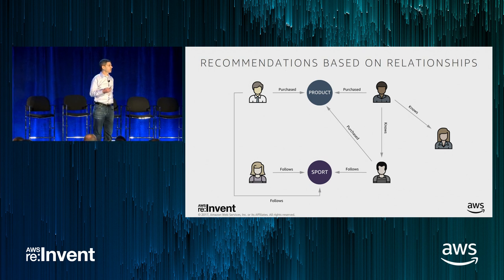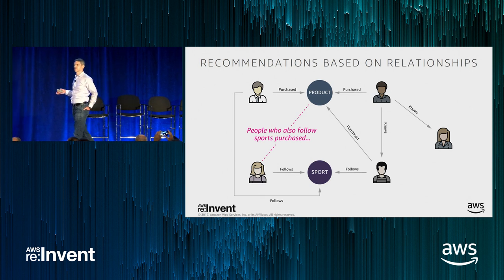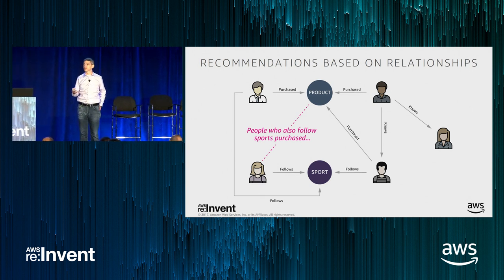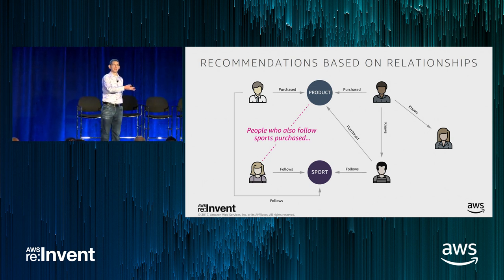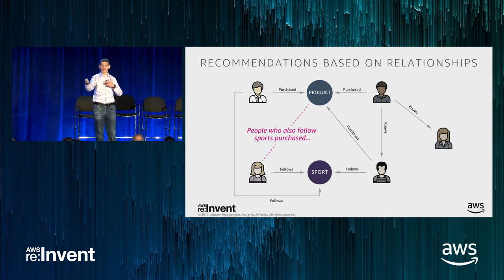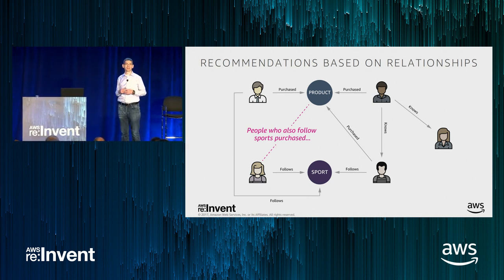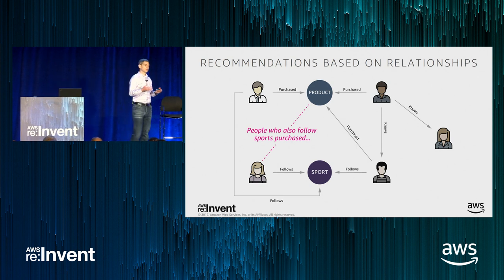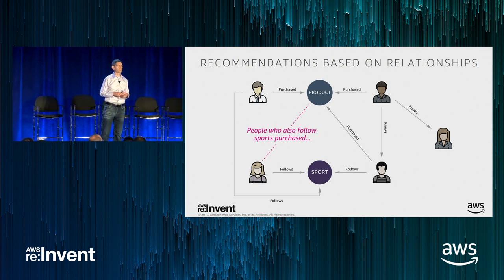It's very easy with this kind of graph to answer questions like: what did people purchase who like sports? If you want to give a recommendation to a person, you can ask: what did people purchase who like the same sport as that person? You get the results, de-duplicate, remove products this person already bought, and show all other options — even sorted by how many purchases those products have gotten.